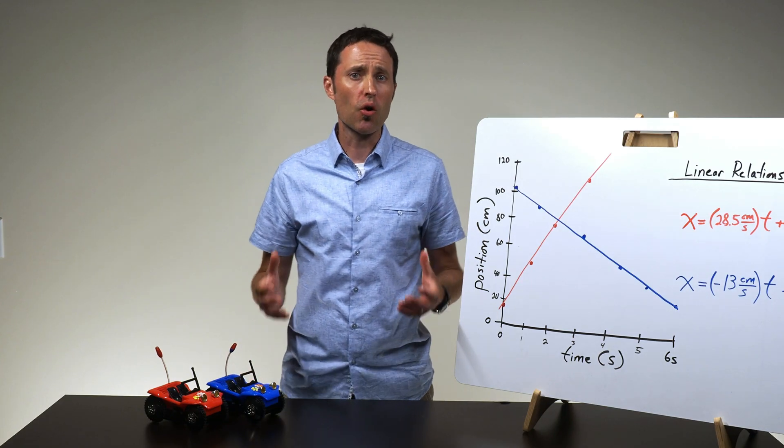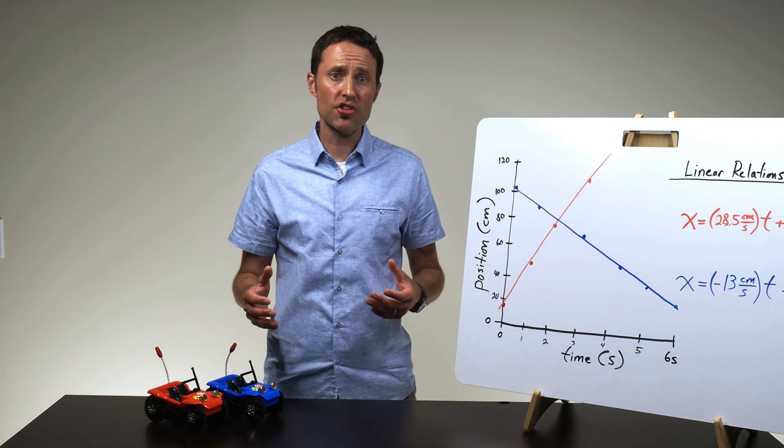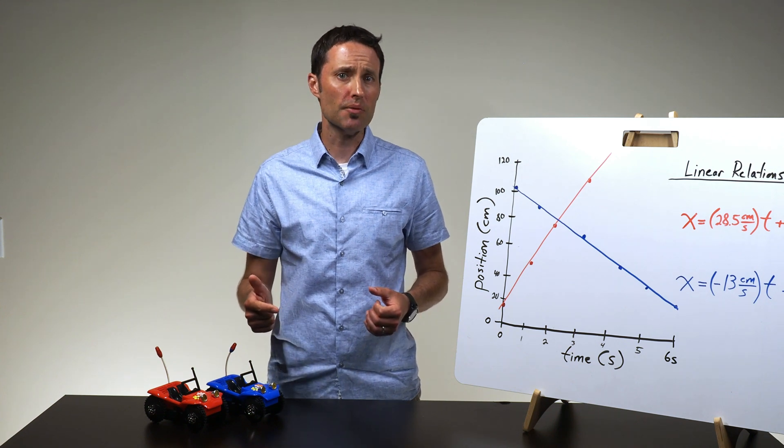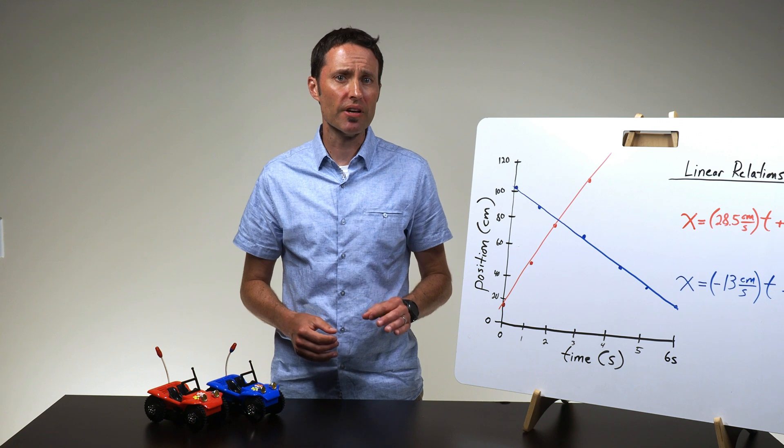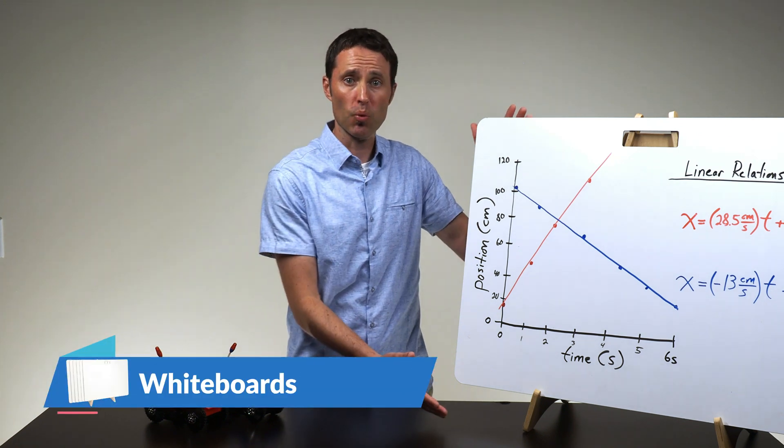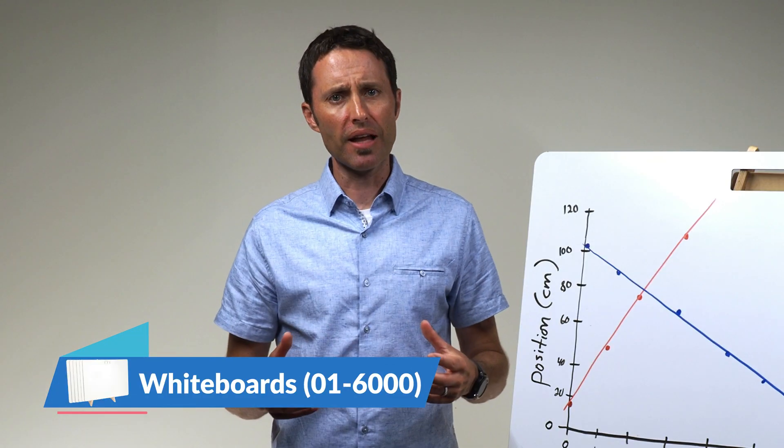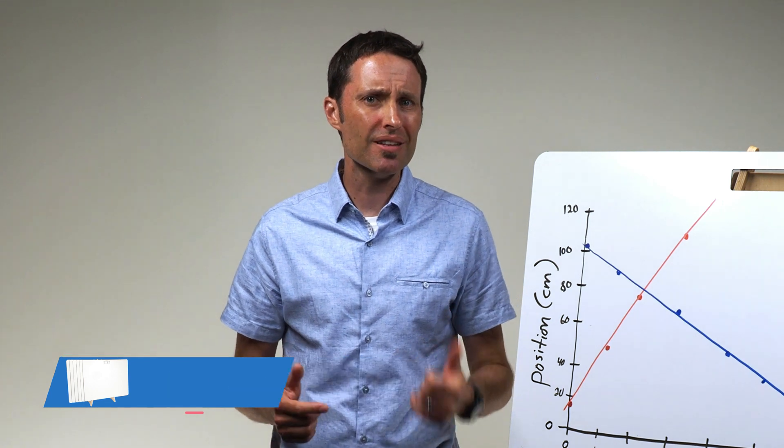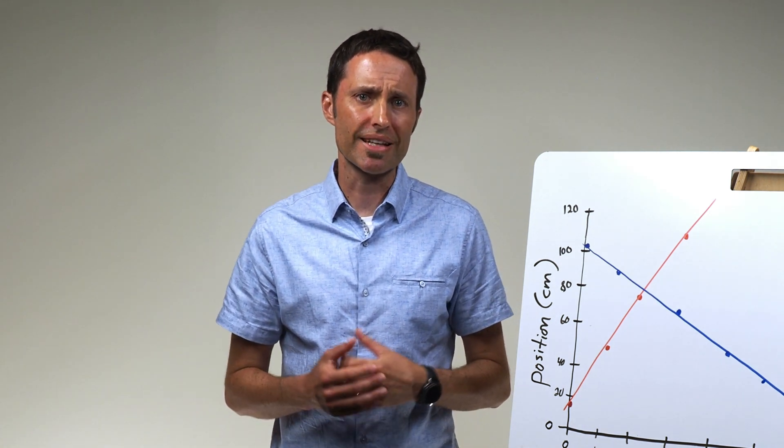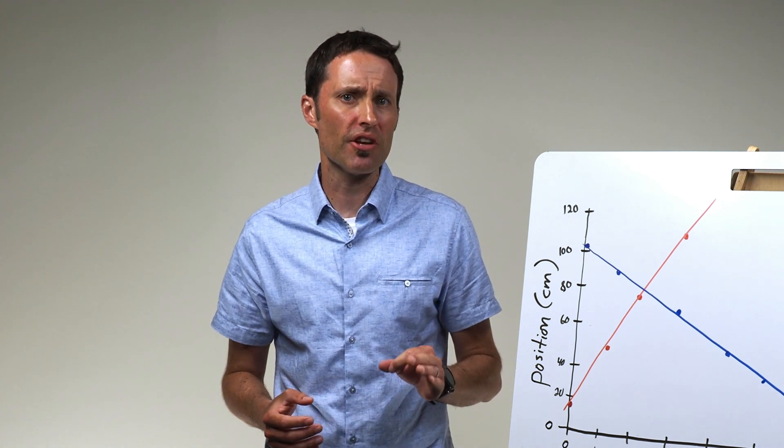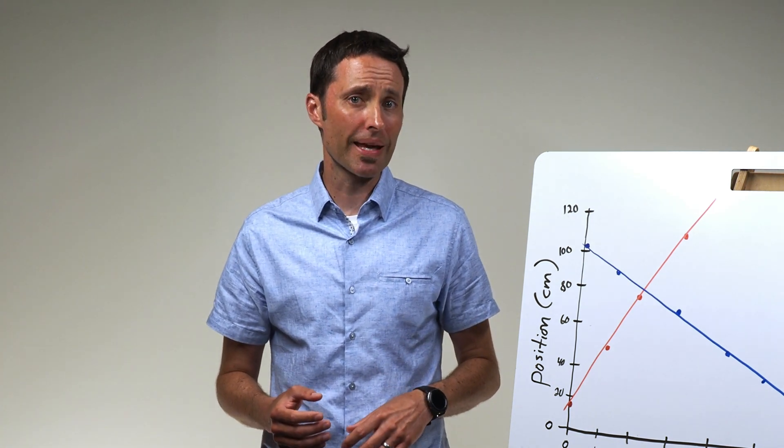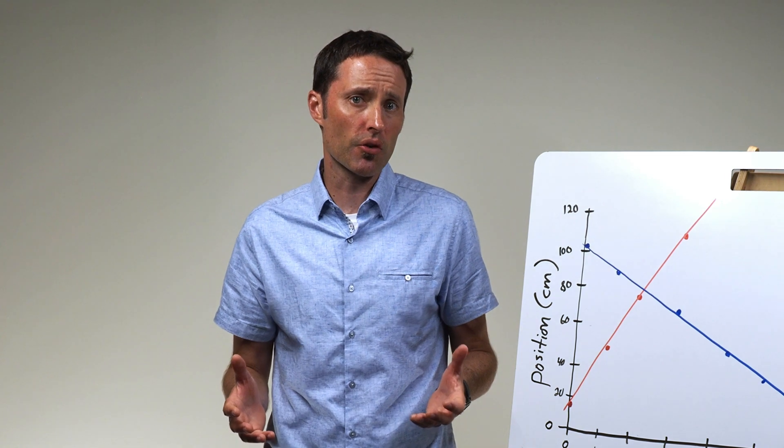To facilitate a whole class conversation about the relationship between the position and time for objects moving at constant speeds, have each lab group record their graph and resulting equation on a large whiteboard. Have the class circle up so that everyone can clearly see the graphs and equations on each whiteboard. Remember that your goal is to help facilitate a conversation that allows your students to make connections and draw conclusions from the graphs and equations.